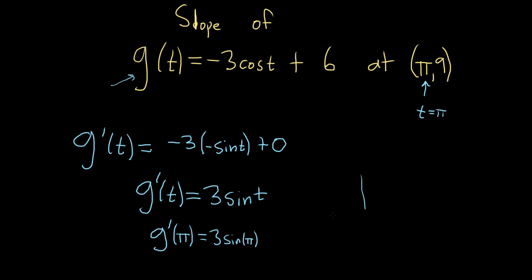And the sine of pi is 0 because on the unit circle, sine is the y-coordinate. And so this is pi right here on the unit circle, and so the y-coordinate here is 0. So that means the sine of pi is equal to 0. So this is 3 times 0, which is equal to 0.